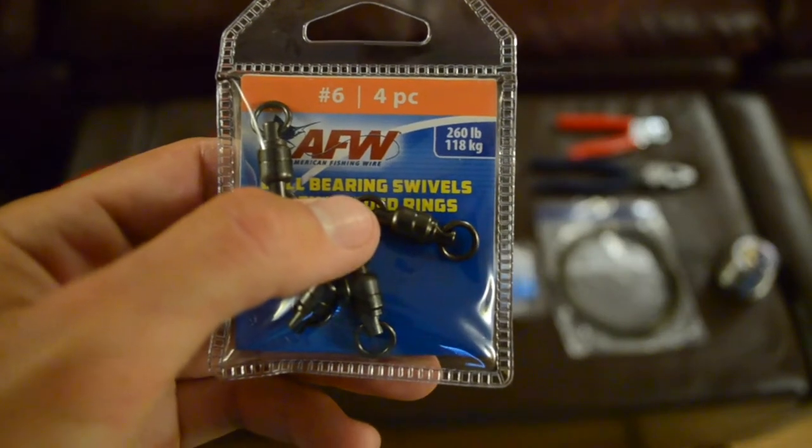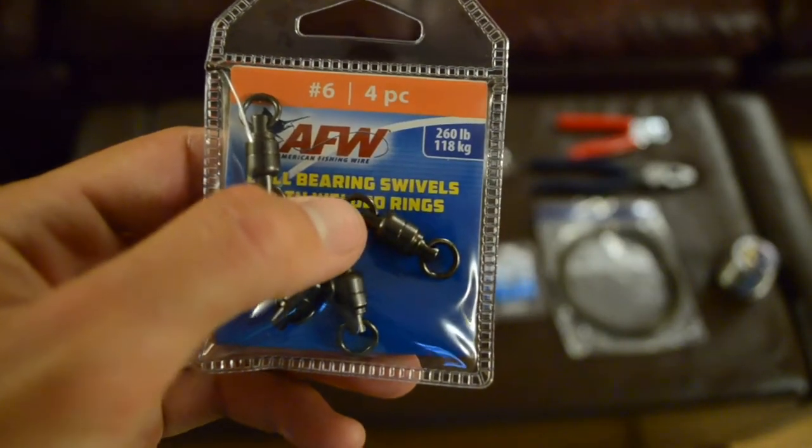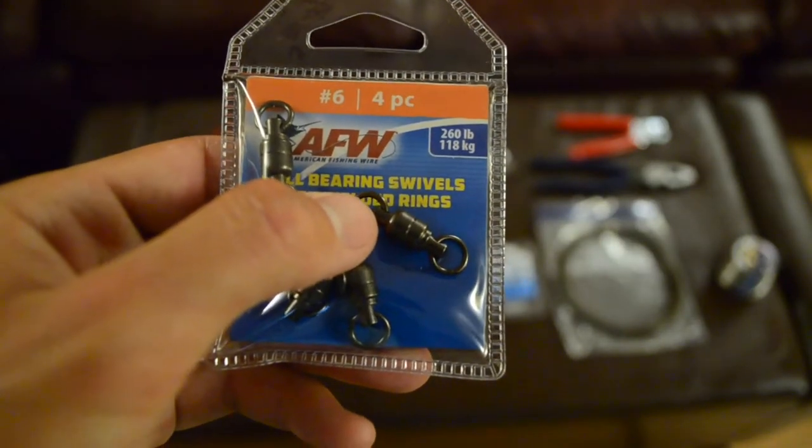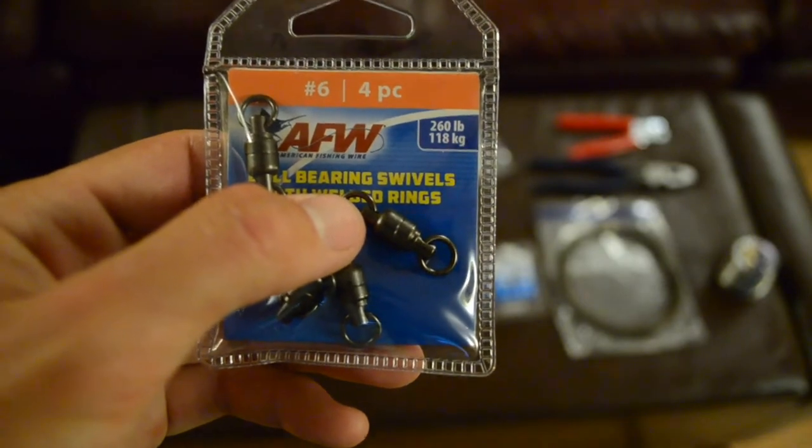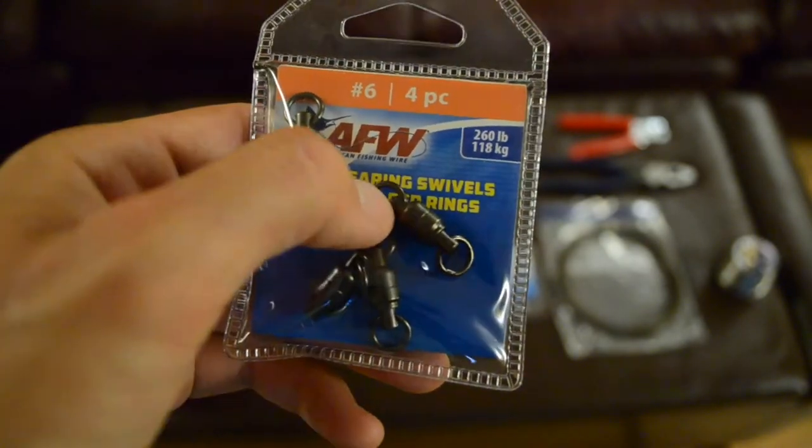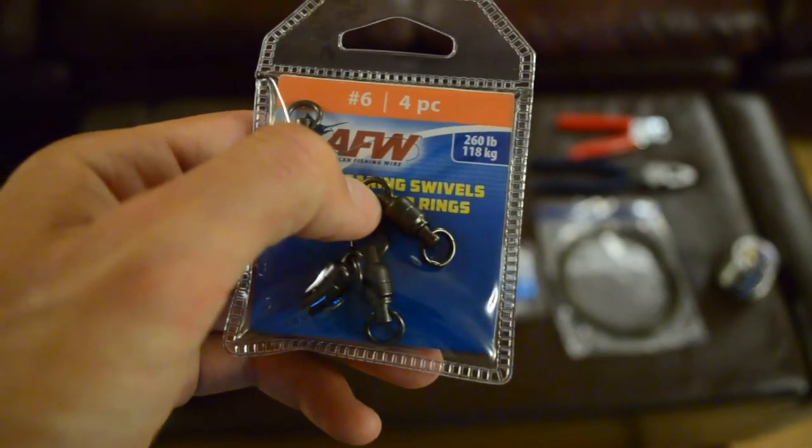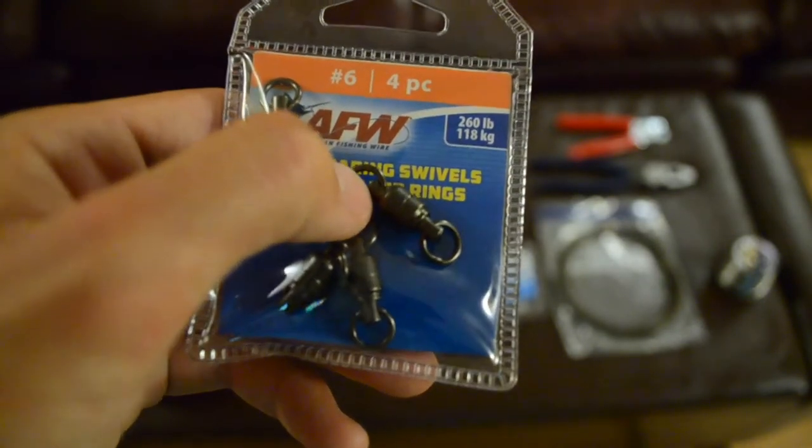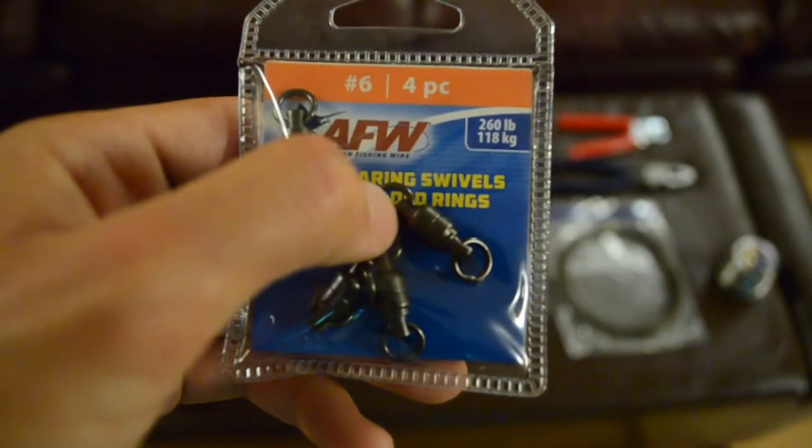The main point is to get something that's really flexible and pretty soft. The next item that we have are ball bearing swivels from American Fishing Wire, 260 pound. The main importance of this is that they're ball bearing swivels and that they're also pretty big, so they fit in the tube without much space on the outside and you could crimp them tight to the tube.